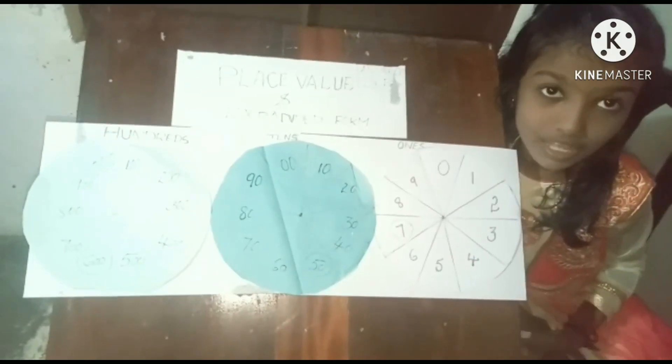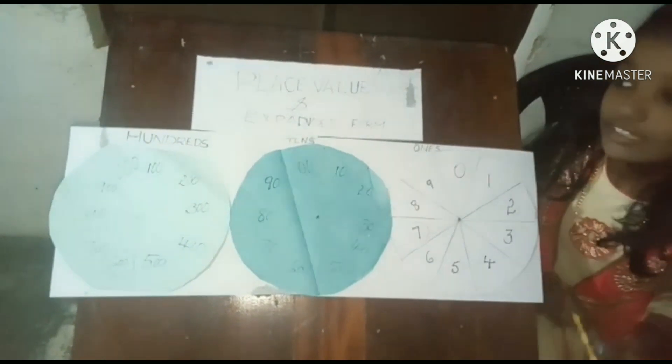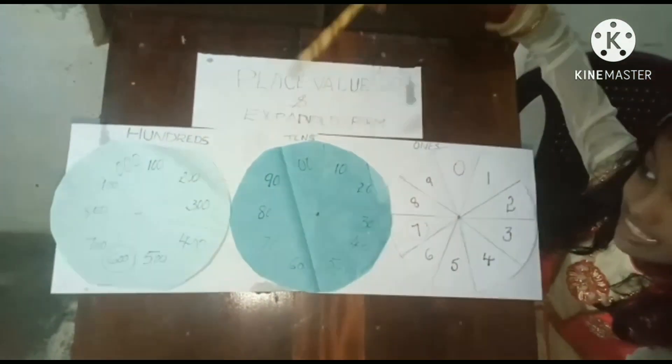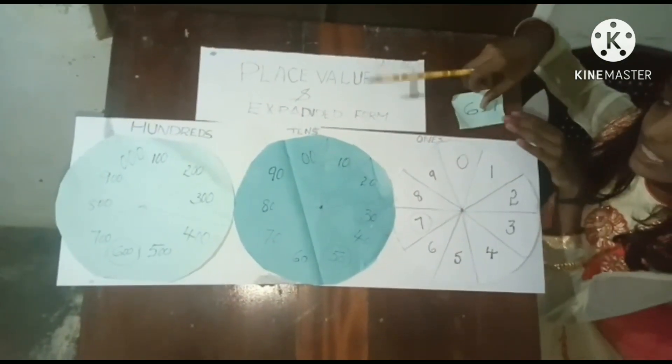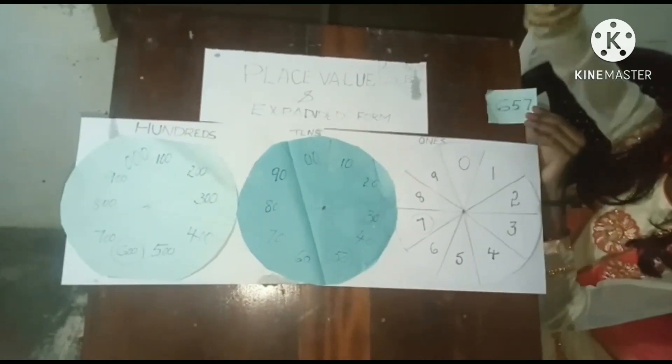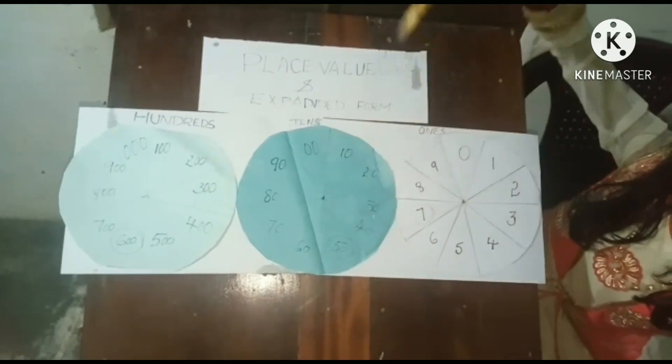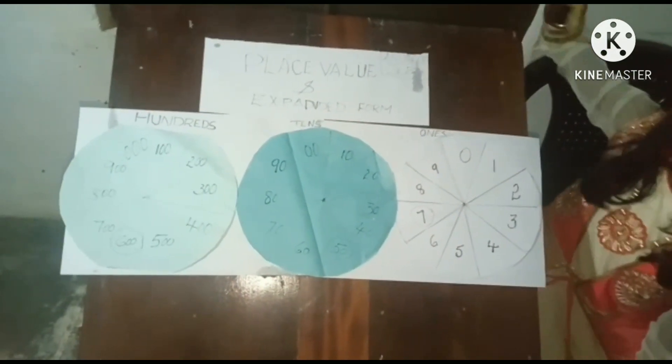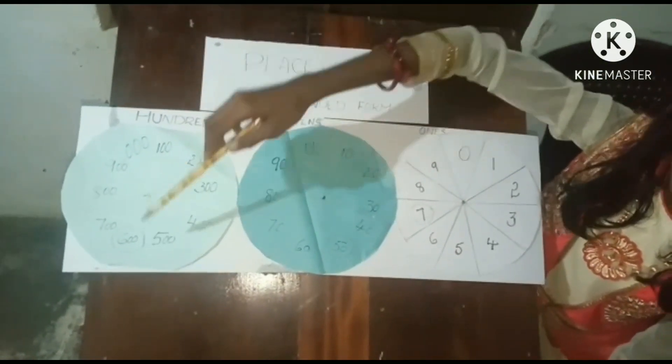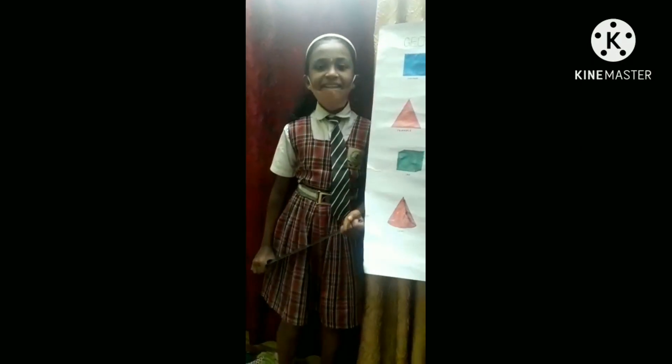This is my multiplication table. I am introducing the place value chart. This is the ones place. This is the tens place. This is the hundreds place. Example: six hundred and fifty-seven. Six is in the hundreds place. Five is in the tens place. Seven is in the ones place. Six hundred plus fifty plus seven.